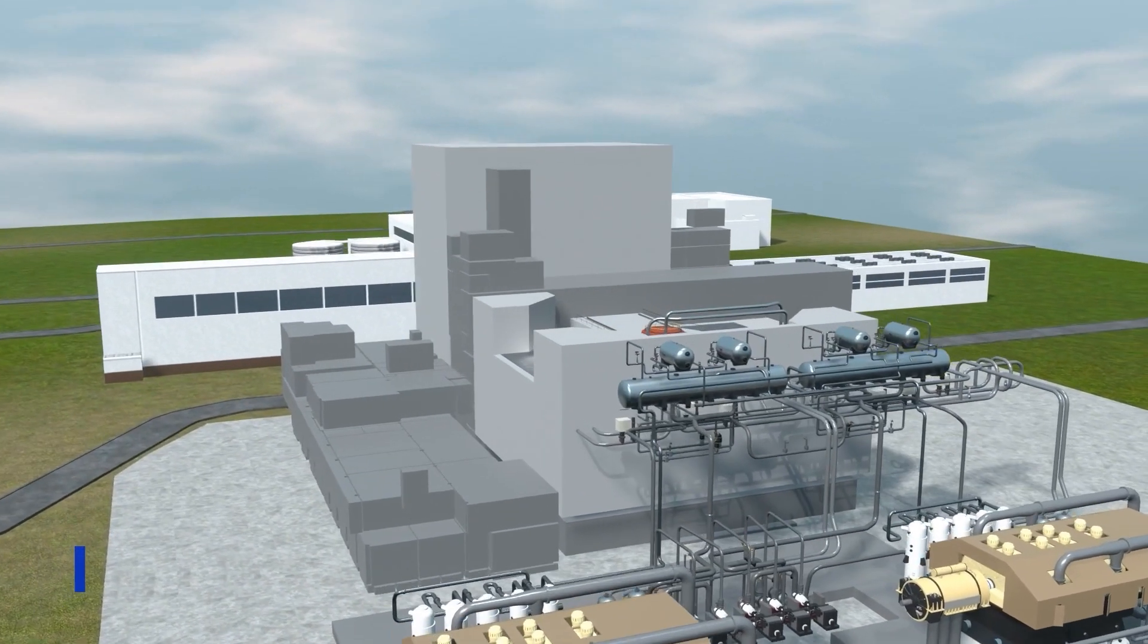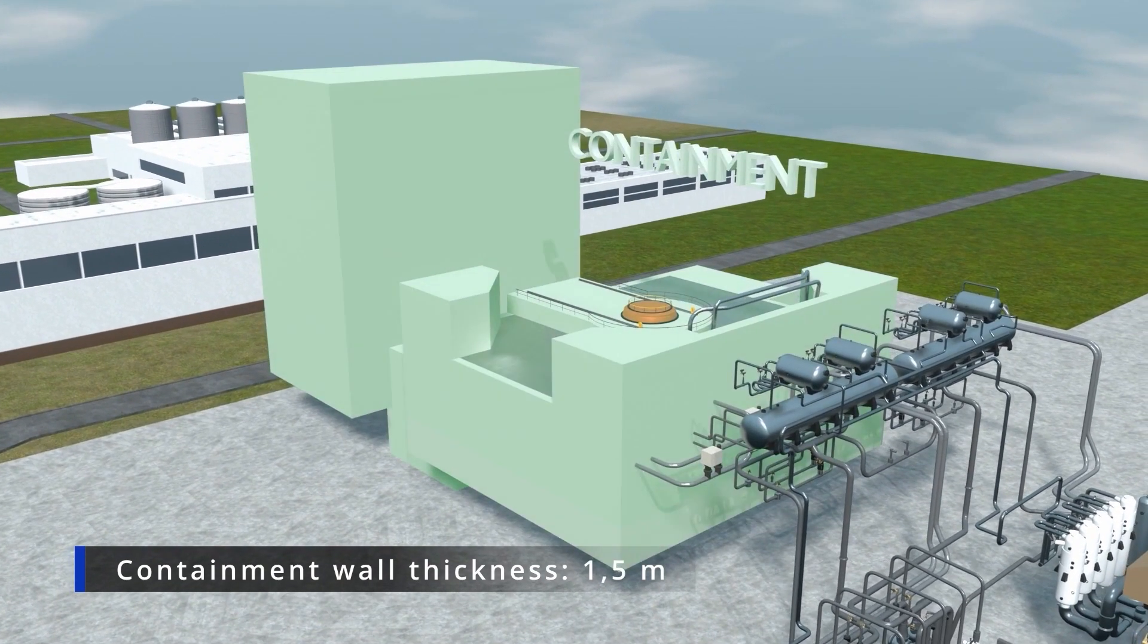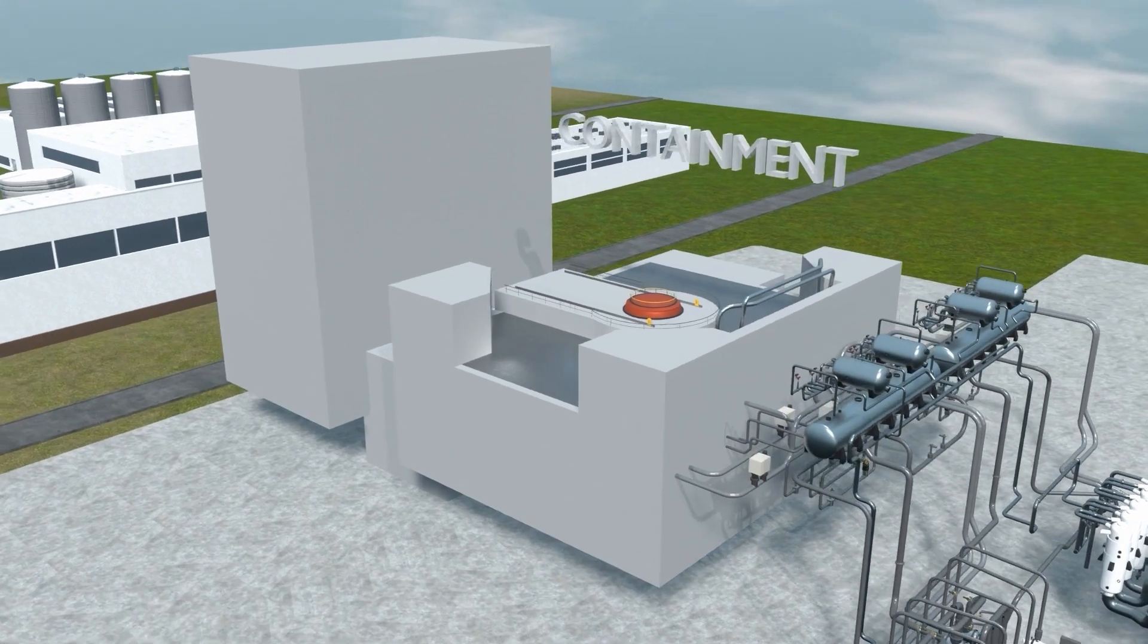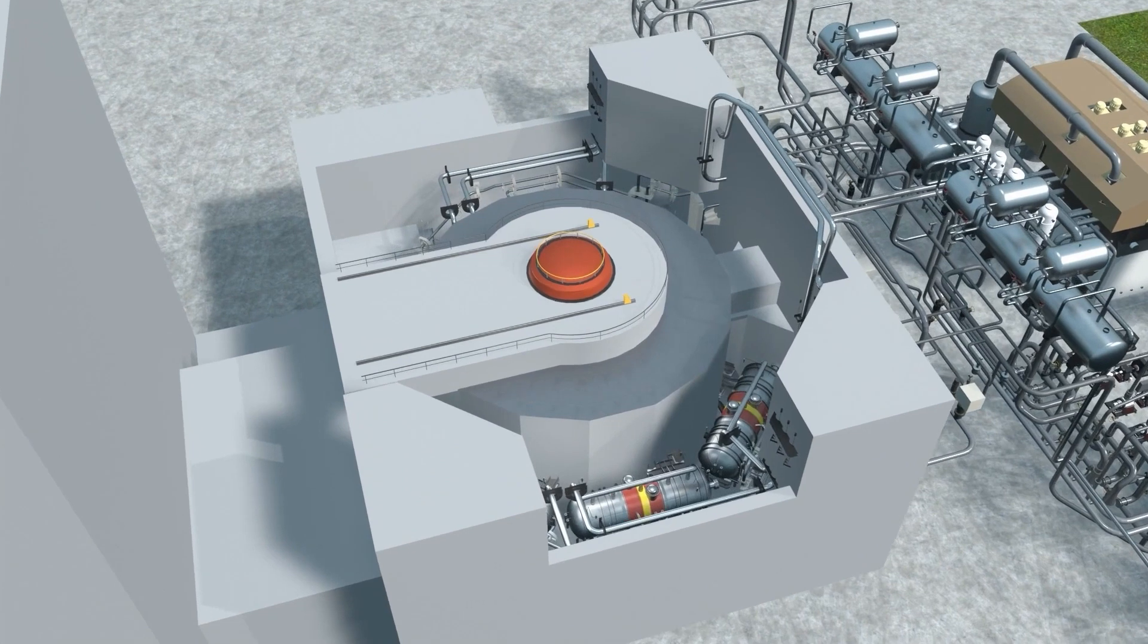The primary circuit has a reinforced concrete envelope, the so-called containment with a barbitage system. It serves as a solid safety barrier. Let's look at how electricity is produced in a nuclear power plant.